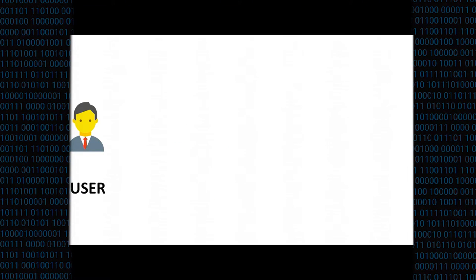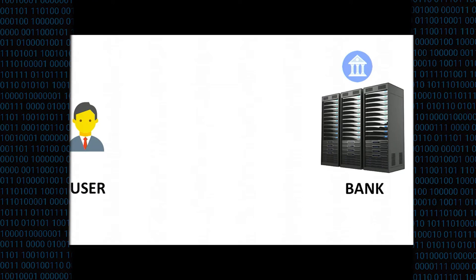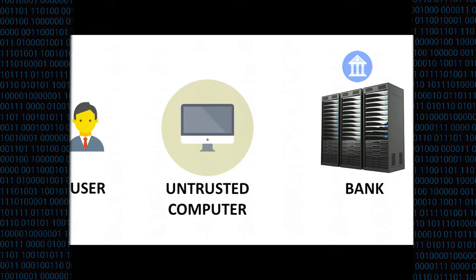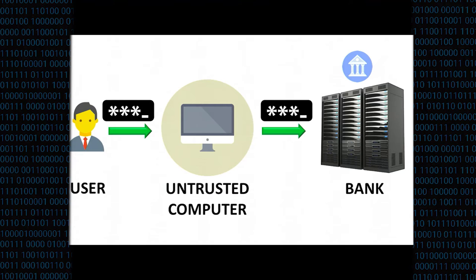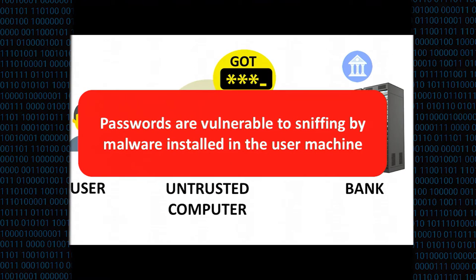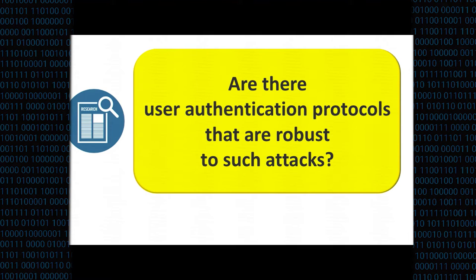This work is about the security and usability of segment-based visual cryptographic authentication protocols. The motivation is that there is a user who wants to access, say, a bank account, but there is no trusted computer. For example, if you are in a public library or school where there is no trusted computer. Once you have entered the password, the untrusted computer may have some malware and it can steal your password. So we ask the question: are there user authentication protocols that are robust to such attacks?